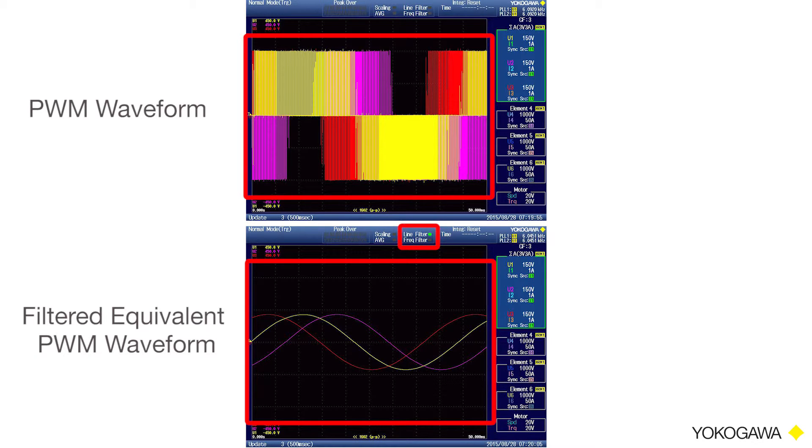With line filters turned on, you're not measuring the power contributed by the higher frequency components. Therefore, your overall efficiency measurements are better than they actually are.